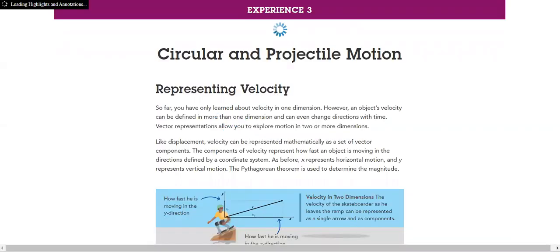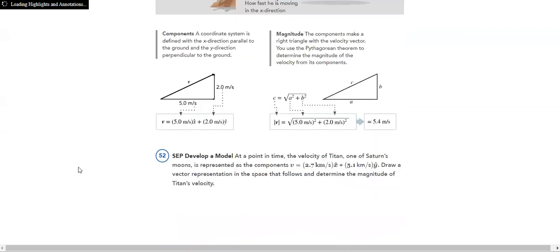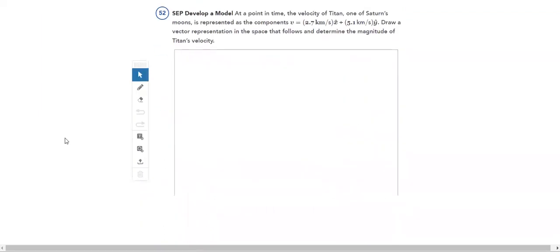In Experience 3, we have circular and projectile motion. This is a very important topic, projectile motion. How is it represented? How do I model it? Adding velocities in two dimensions.